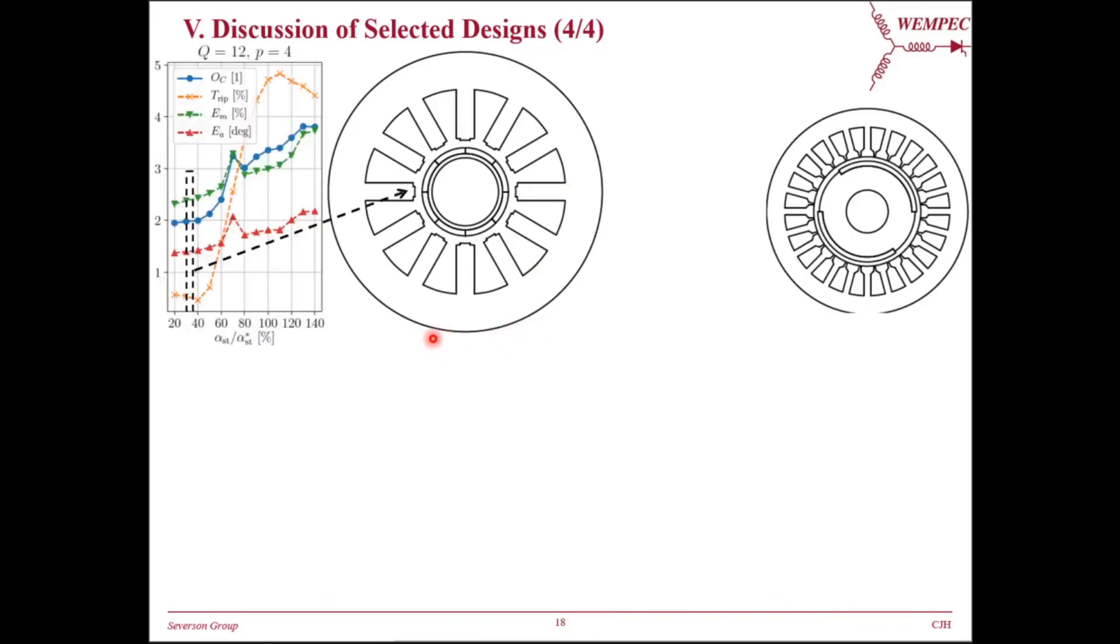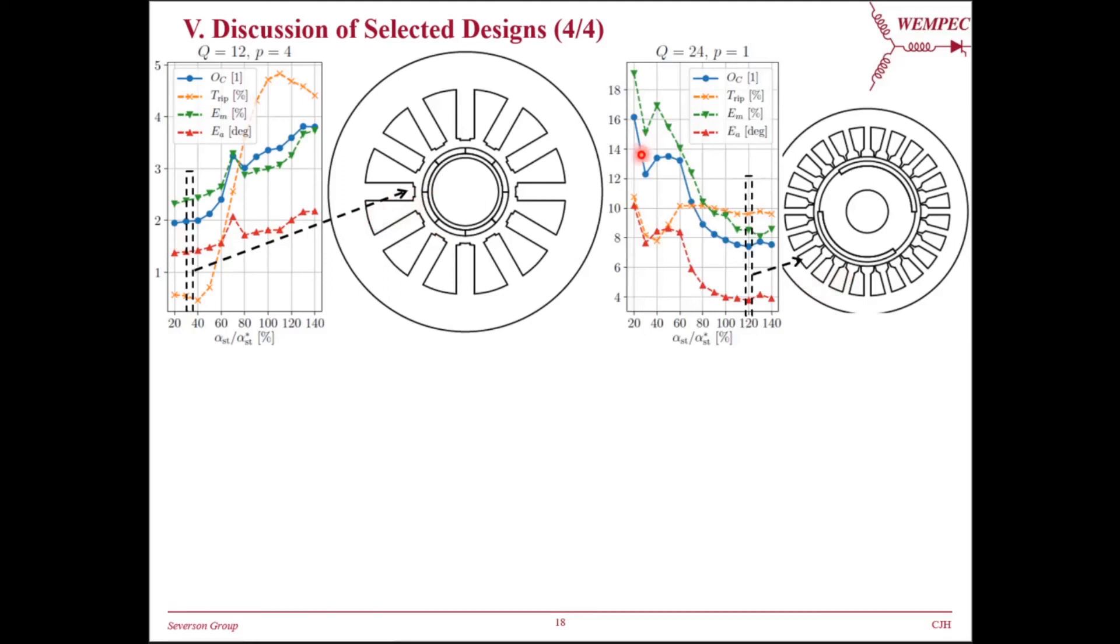We have conducted a parameter sensitivity analysis to alpha-st for two optimal designs, where alpha-st is changed while all other geometric parameters are the same. For the Q12P4 design, the smaller alpha-st value is, the smaller the ripple performance sum becomes. So a wide-pointed slot shape occurs. However, for the Q24P1 design, the ripple performance sum takes lower value if a larger alpha-st value is used. This leads to a closed-slot shape design. To determine whether these two slot shapes are representative of each topology, the histogram plot of alpha-st values of over 70 Pareto front optimal designs are presented.